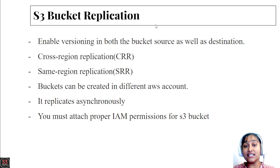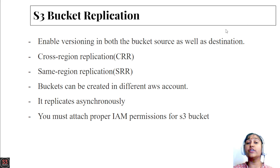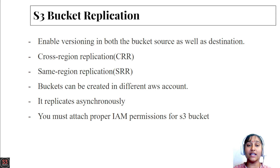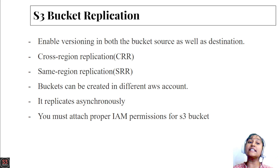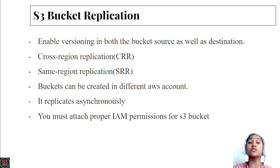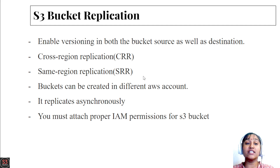For replication, first of all we need to enable versioning in both buckets — the source bucket and the destination bucket. In the source we are going to upload our objects and the objects will be duplicated to our destination bucket. Enabling versioning is the most important thing in replication.